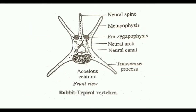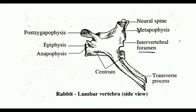The neural arch contains a neural spine, a pair of lateral transverse processes, and paired articular processes called pre-zygapophysis and post-zygapophysis. The zygapophysis helps in articulation with the vertebrae in front and behind.